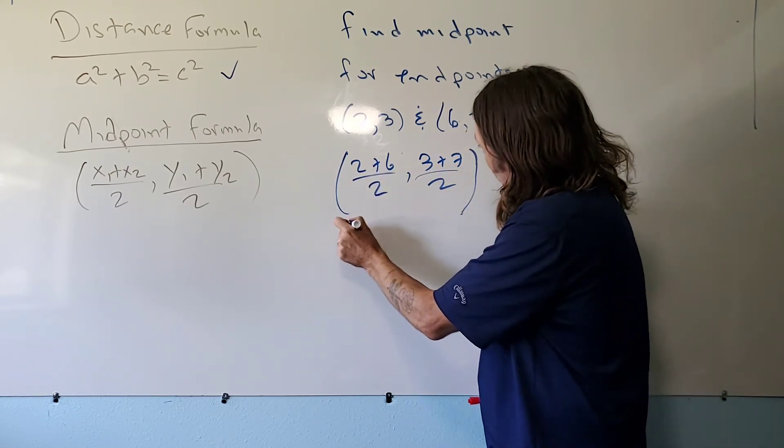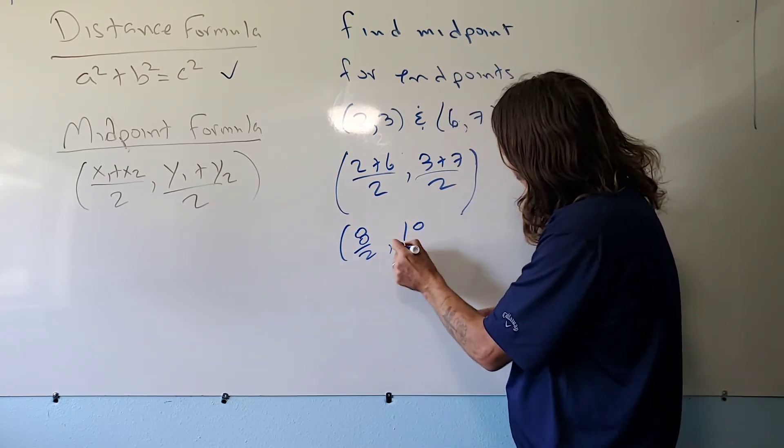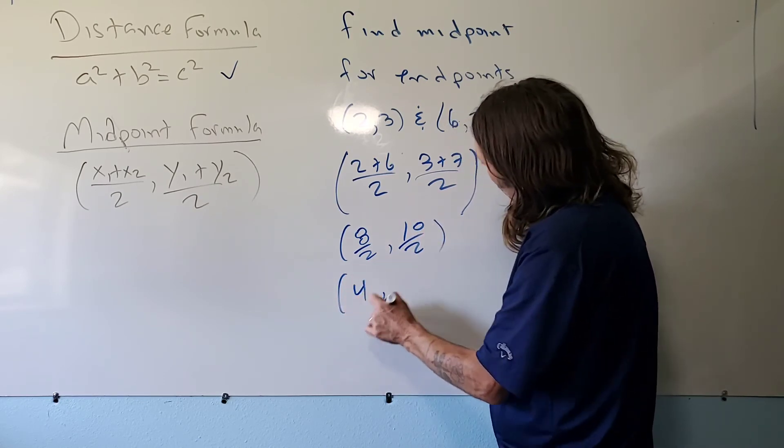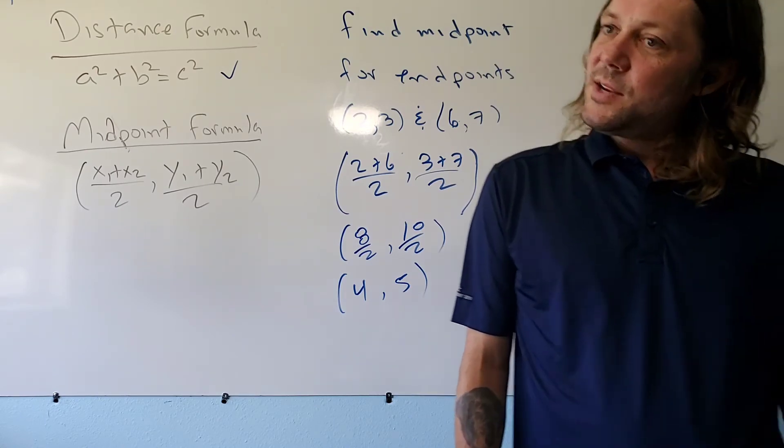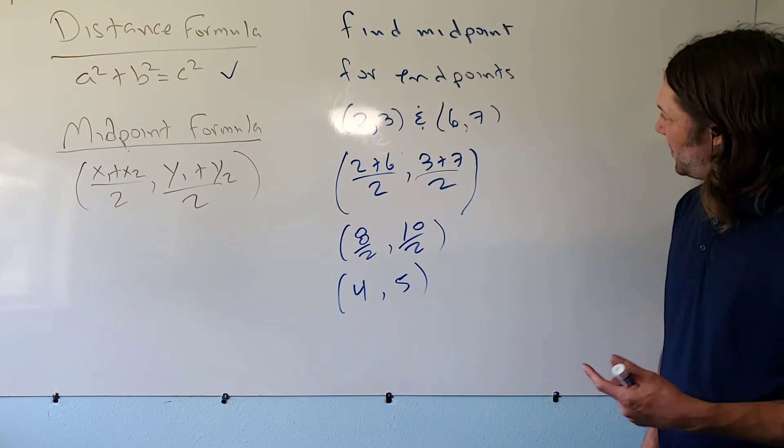So I get eight over two and I get ten over two. Eight over two simplifies to four, and ten over two simplifies to five. So this is a clue for the last problem. Okay, so I'm just going to show you something. Let's see if we can figure this out.